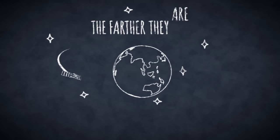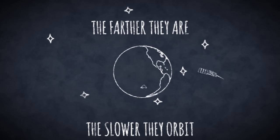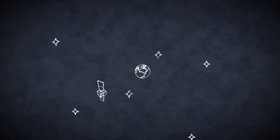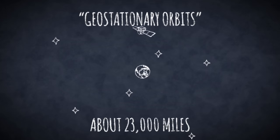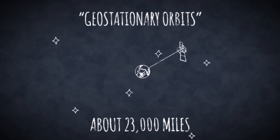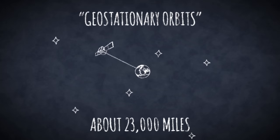In fact, the farther away they are, the more slowly they orbit. Some of the most useful satellites follow geostationary orbits about 23,000 miles out. At that distance they're orbiting Earth at the same rate at which the planet rotates.